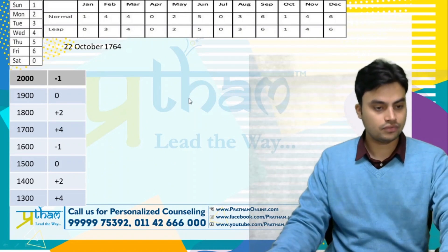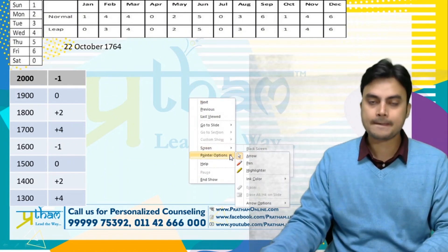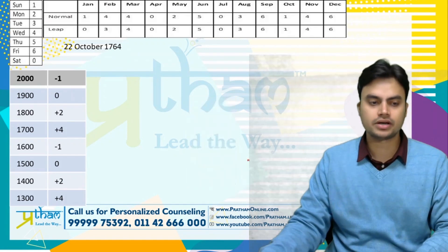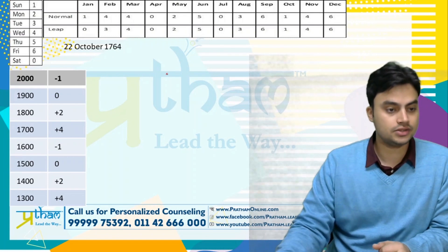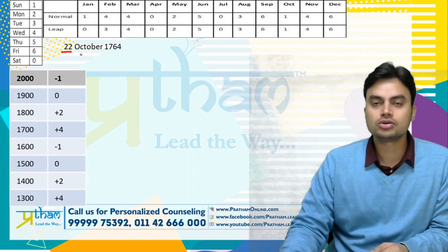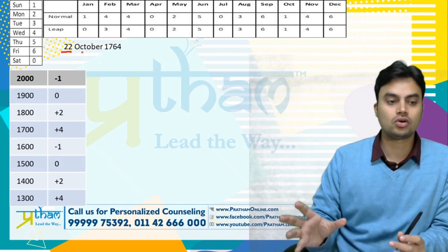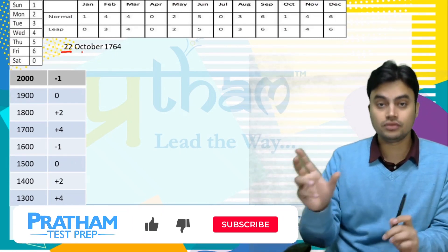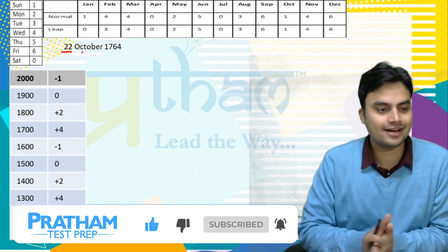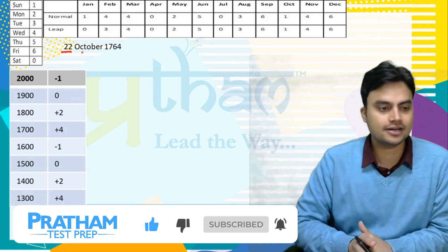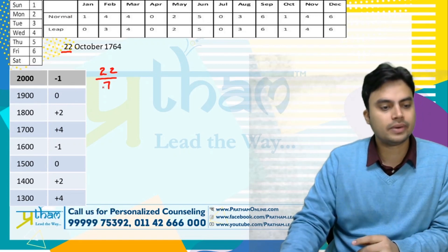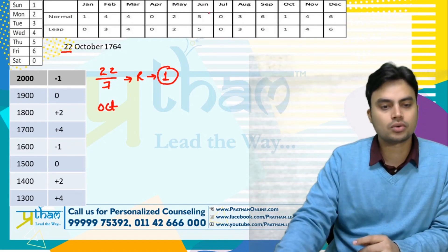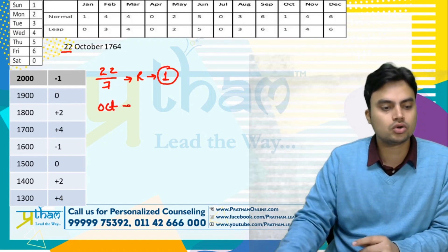Next question: 22nd October 1764. Ye bhi aisa date hai jahaan Battle of Buxar lada gaya tha 1764 ko. Saath hi saath mein aapka GK bhi strong kar raha hoon. Toh baat karte hain — 22nd October 1764, Battle of Buxar was fought on which day? 22 divided by 7, remainder is 1. October ka code — aap dekh sakte ho — October ka code is 1.